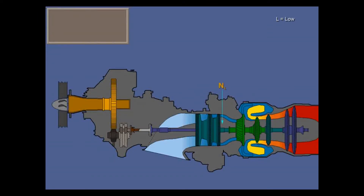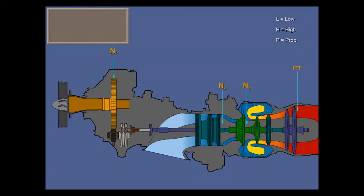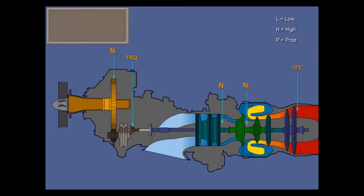NL, low-stage speed, is sensed after the low-pressure compressor. NH, high-stage engine speed, is sensed here. NP, propeller speed, here. And ITT, inter-turbine temperature, here, after the power turbine. ITT is compensated electronically to give an inter-turbine reading. Engine torque is sensed here. Torque is the twisting of the shaft between the power turbine shaft and the propeller reduction gearbox.